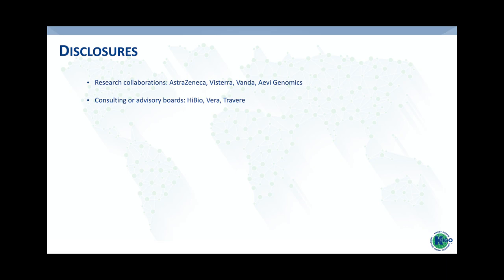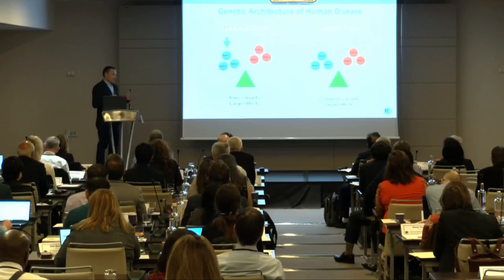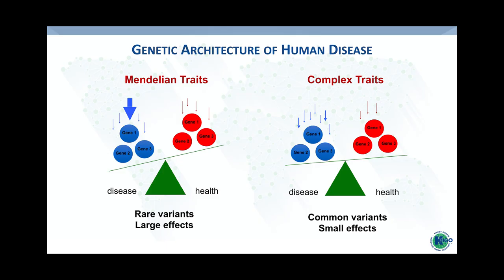I'd like to start by taking a geneticist's view of complex traits. From the genetic perspective, we always think about human diseases in two categories: monogenic diseases or Mendelian traits that are caused by rare alleles with really large effect, typically observed in families. These are penetrant disorders, and they have a large effect on disease risk, but they're relatively rare in the general population.